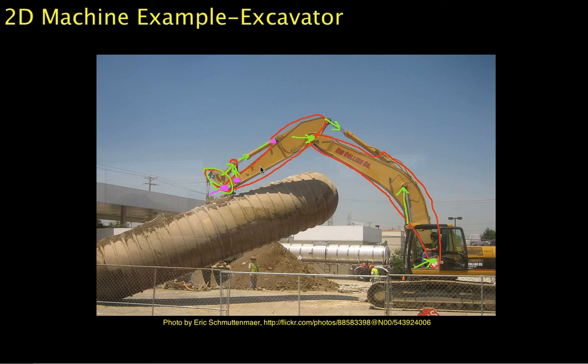Okay, welcome to part 4 of our example of analyzing a 2D machine, this excavator holding this underground storage tank.